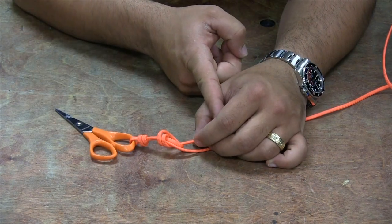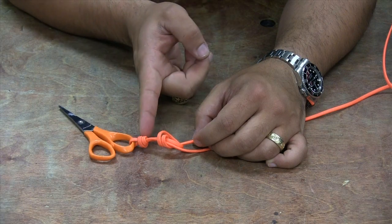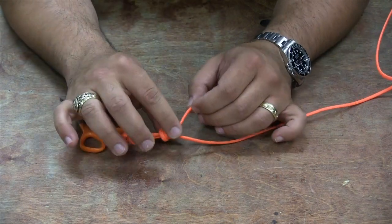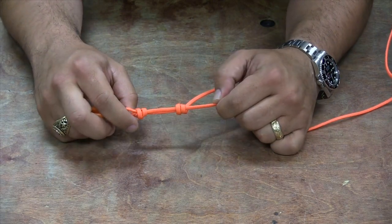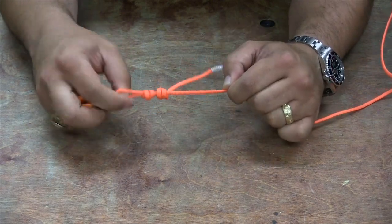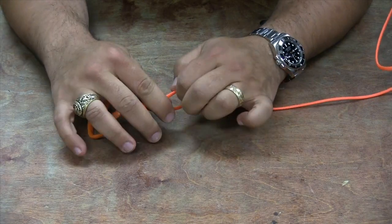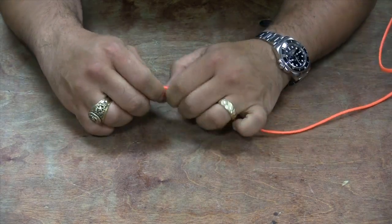Now where you cinch this knot up is going to determine how big the loop is going to be. The further back you cinch it, the bigger the loop, the closer up, the smaller the loop. So at this point you're going to cinch this knot up and then you're going to pull the two until they're going to start coming together. They come together. You can then cinch this knot up, cinch that knot up.